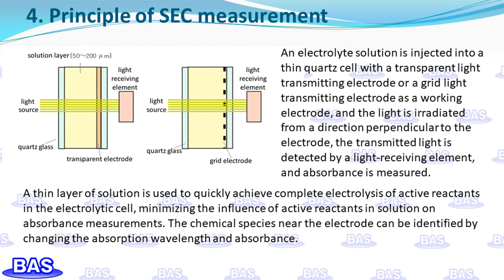For thin-layer spectro-electrochemical measurements, the electrolyte is typically injected into a thin quartz cell with a liquid layer thickness of about 50 to 200 micrometers. A transparent light-transmitting electrode or grid-type light-transmitting electrode serves as the working electrode. Light is irradiated in the direction of the electrode, the transmitted light is detected by the light-receiving element, and the absorbance is measured. A thin layer of solution enables quick, complete electrolysis of active reactants, minimizing their influence on absorbance measurements. Chemical species near the electrode can be identified by changes in absorption wavelength.